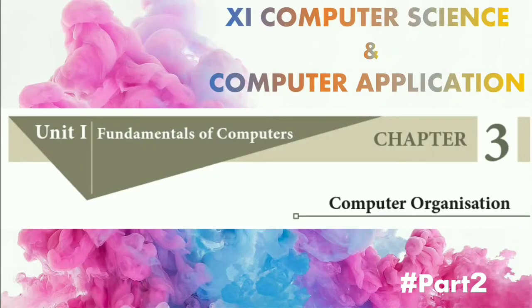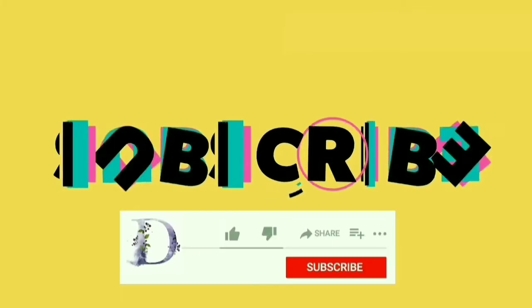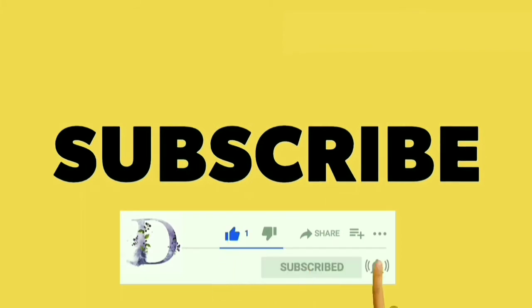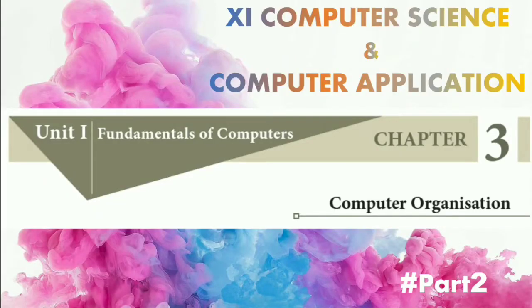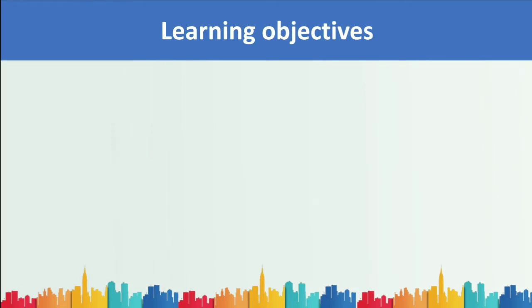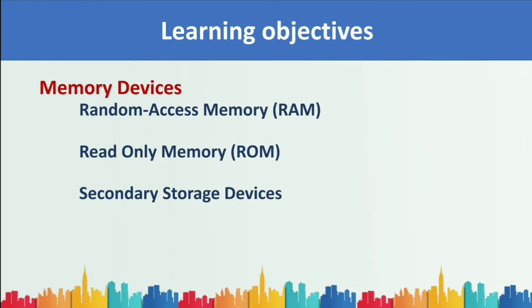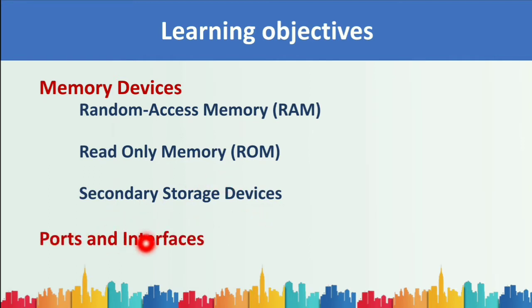Hi students, welcome back. This is Plus One Computer Science and Computer Application, Chapter 3 Part 2. In this video, you are going to learn memory devices — that is Random Access Memory, Read-Only Memory, secondary storage devices, and also about ports and interfaces.